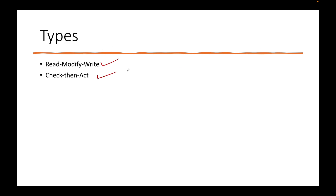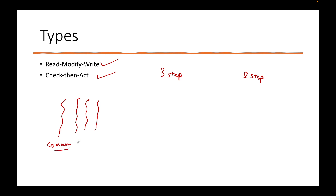There are two types of race condition. The first is Read-Modify-Write, a three-step process. The second is Check-and-Act, a two-step process. One important thing to understand is that the order in which threads run is completely dependent on the OS and its scheduling algorithm. The programmer writing the code has no control over whether T1, T2, or T3 will execute next. With millions of threads you cannot guarantee the order of execution.